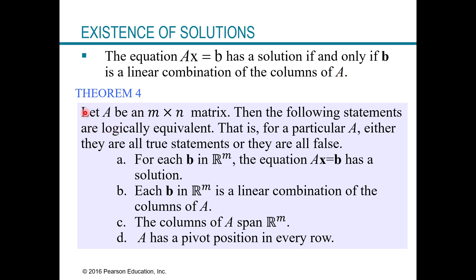The following theorem states that all four of these conditions are equivalent — they're either all true at the same time or all false at the same time, depending on your matrix A. Condition A: for each B in R^M, the equation AX equals B has a solution. If that holds, then condition B: every B in R^M can be written as a linear combination of the columns of A.